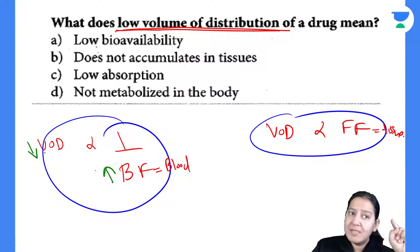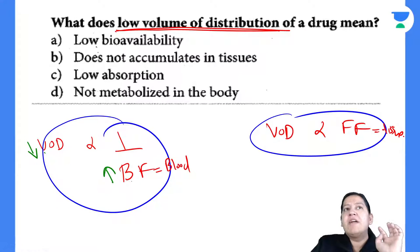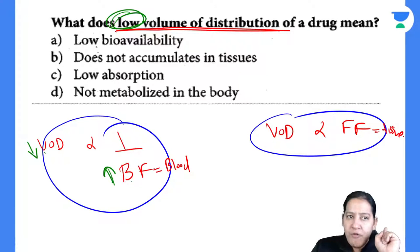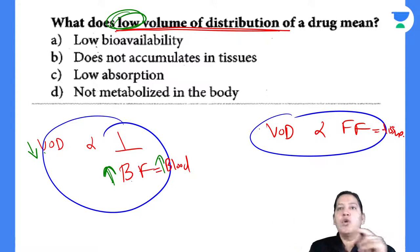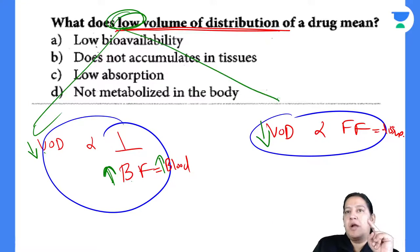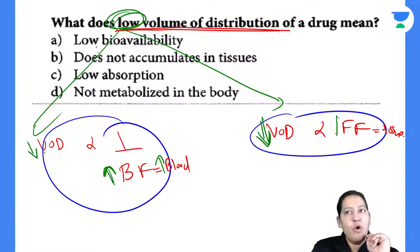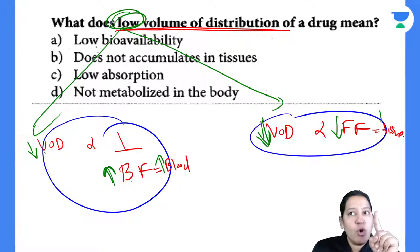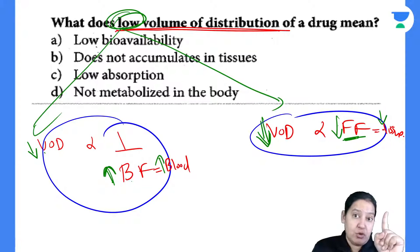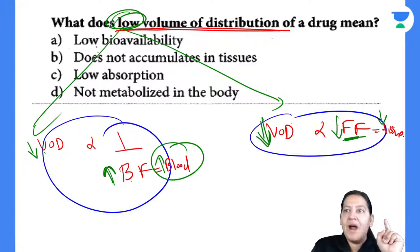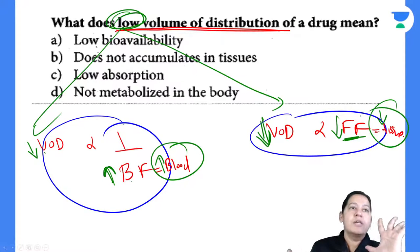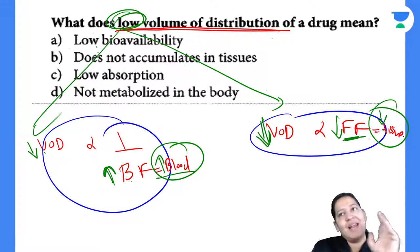Reading the options: low bioavailability — no, that is not the answer. Does not accumulate in the tissue — yes, because low volume of distribution means low free form, and free form enters tissue. So it does not accumulate in tissue. Low absorption — no, volume of distribution has nothing to do with absorption. Not metabolized — no, bound will eventually convert to free. The correct answer is B.